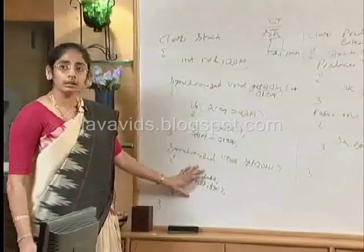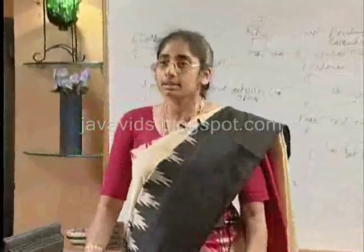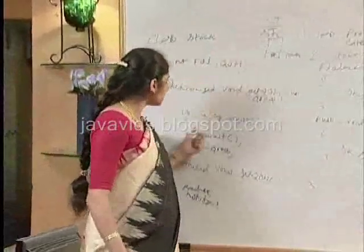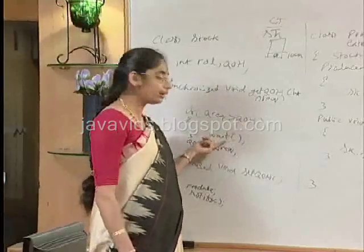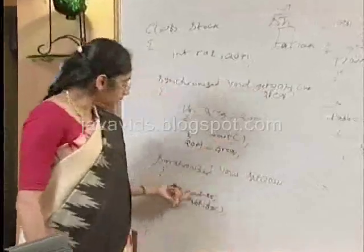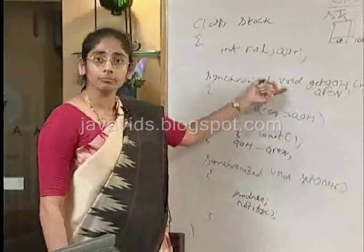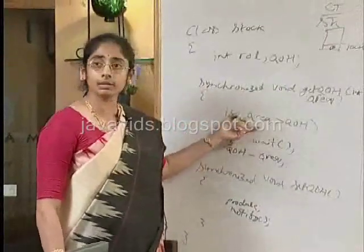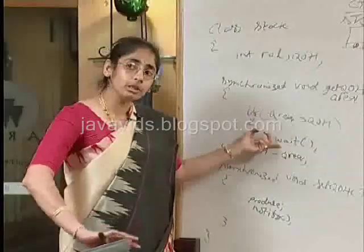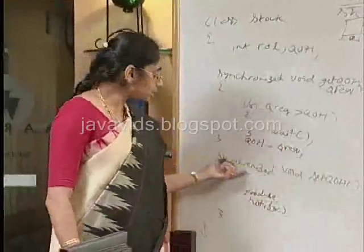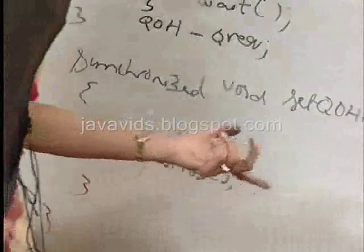There is also the deadlock case here. Assume the consumer thread placed a lock, found that quantity required is greater than quantity on hand, called wait, and went into the wait pool. Before the producer can set quantity on hand, another consumer thread calls get quantity on hand, places a lock, checks the condition, and it also calls wait. Now you have more than one thread in the wait pool. When the producer gets the lock, calls set quantity on hand, and calls notify — which thread will it notify?